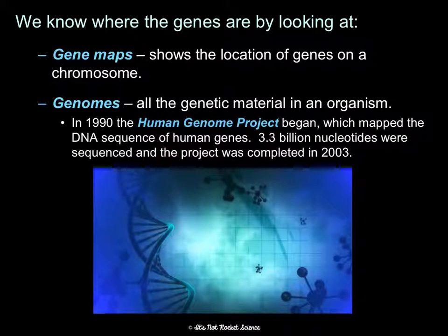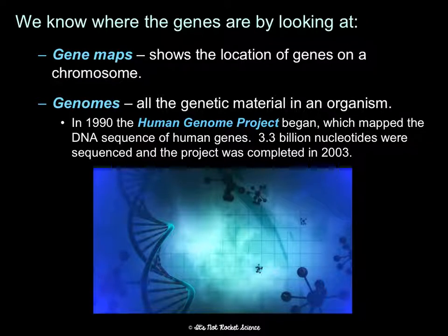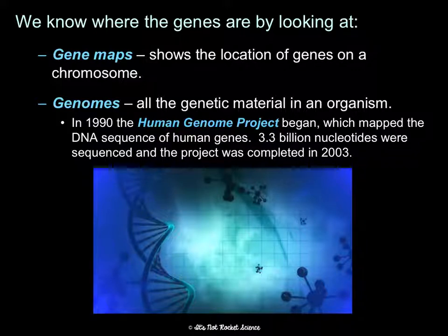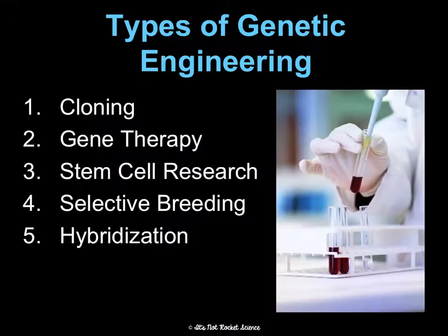In 1990, the Human Genome Project began and it mapped the DNA sequence of human genes. 3.3 billion nucleotides were sequenced, and the project was completed in 2003. Because of this, we're able to know so much more about genetic engineering.